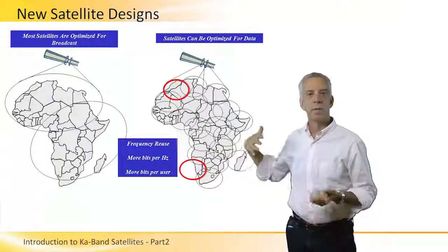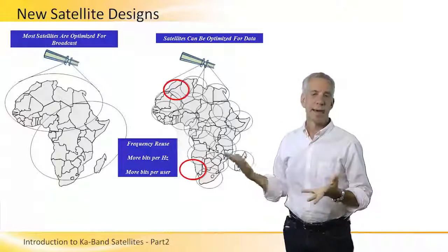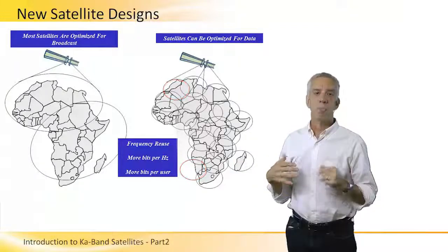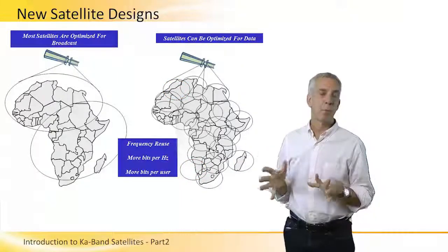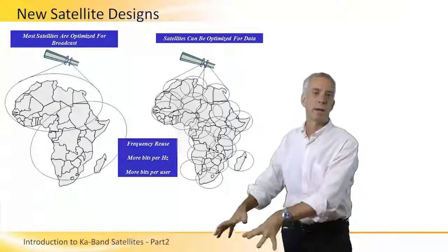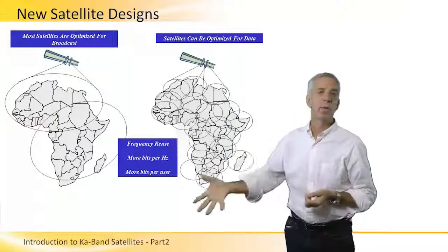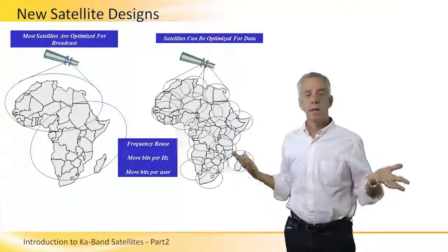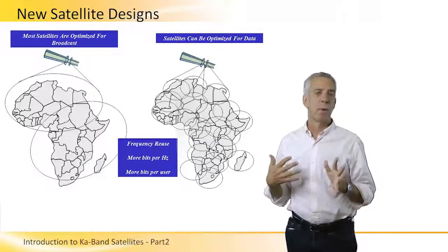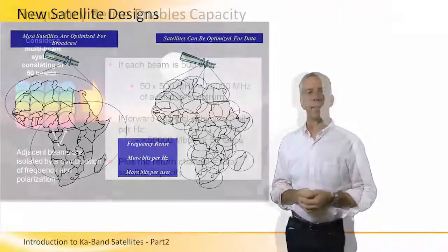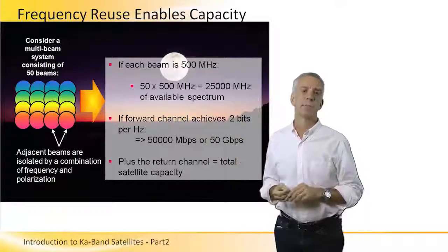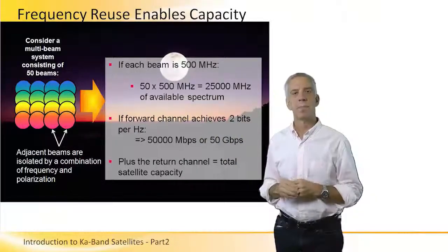Having many user beams allows us to reuse the frequency spectrum allocated for that satellite and orbital slot. These smaller beams give us more EIRP on the downlink and more G/T on the receive link, which translates into more bits per hertz and more bits on the satellite. Frequency reuse in KA band systems is really the key enabler to achieve high capacity.